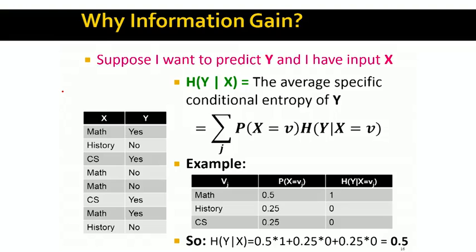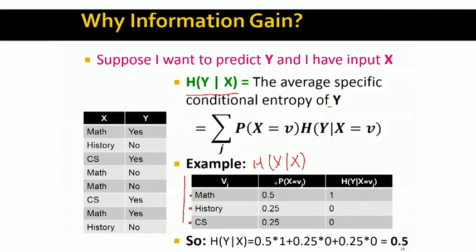Let's look at a simple example of conditional entropy. The conditional entropy of y given x is the average specific conditional entropy of y. Taking the input data table on the left, I can create a conditional entropy table where for every value of x, I compute p(x) and the entropy of y for that given value of x. I then do the weighted summation and find that the entropy of y given x in our case is 0.5.